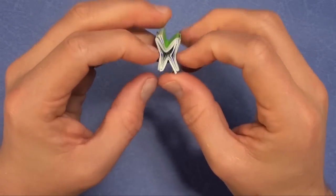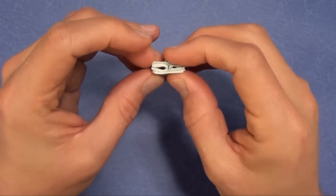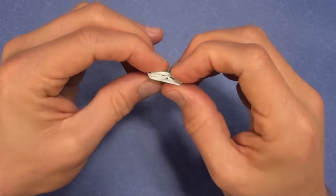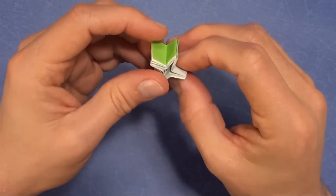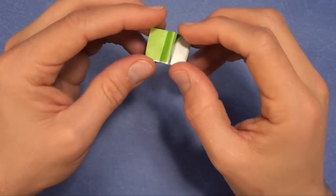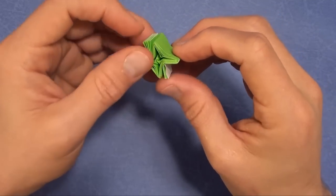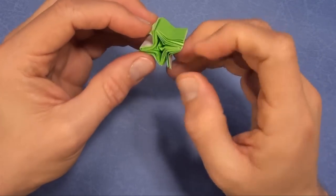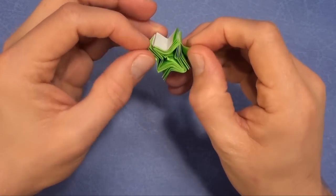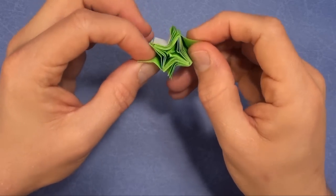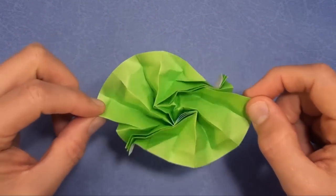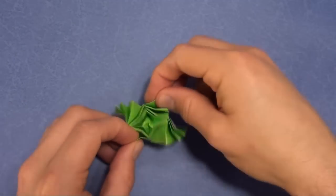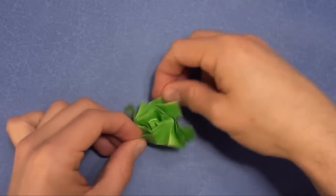And flatten this way. Flatten a couple times. And turn it over. Now hold right here. And here it is. It's a flasher.